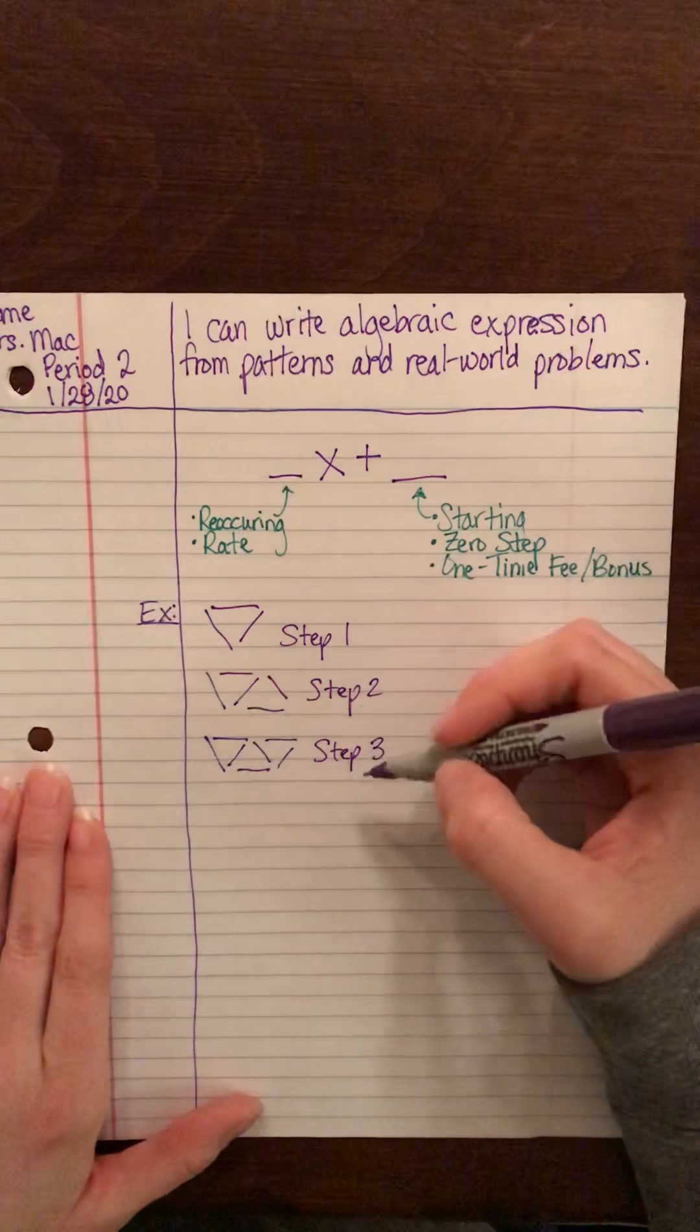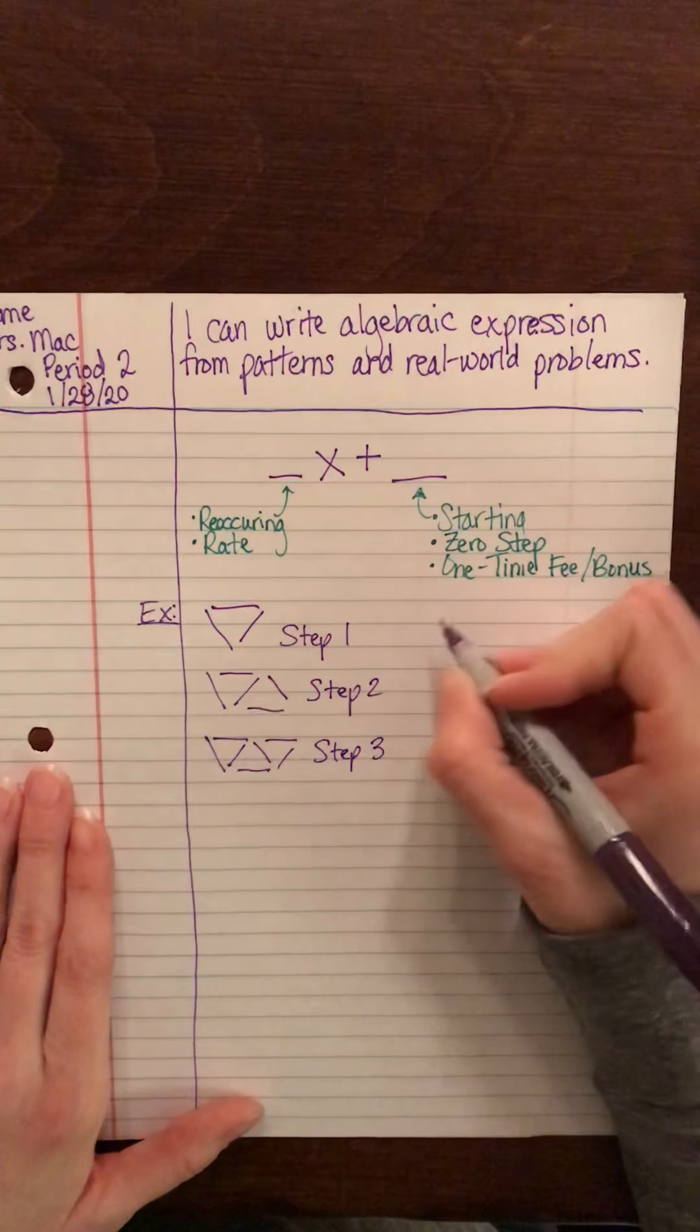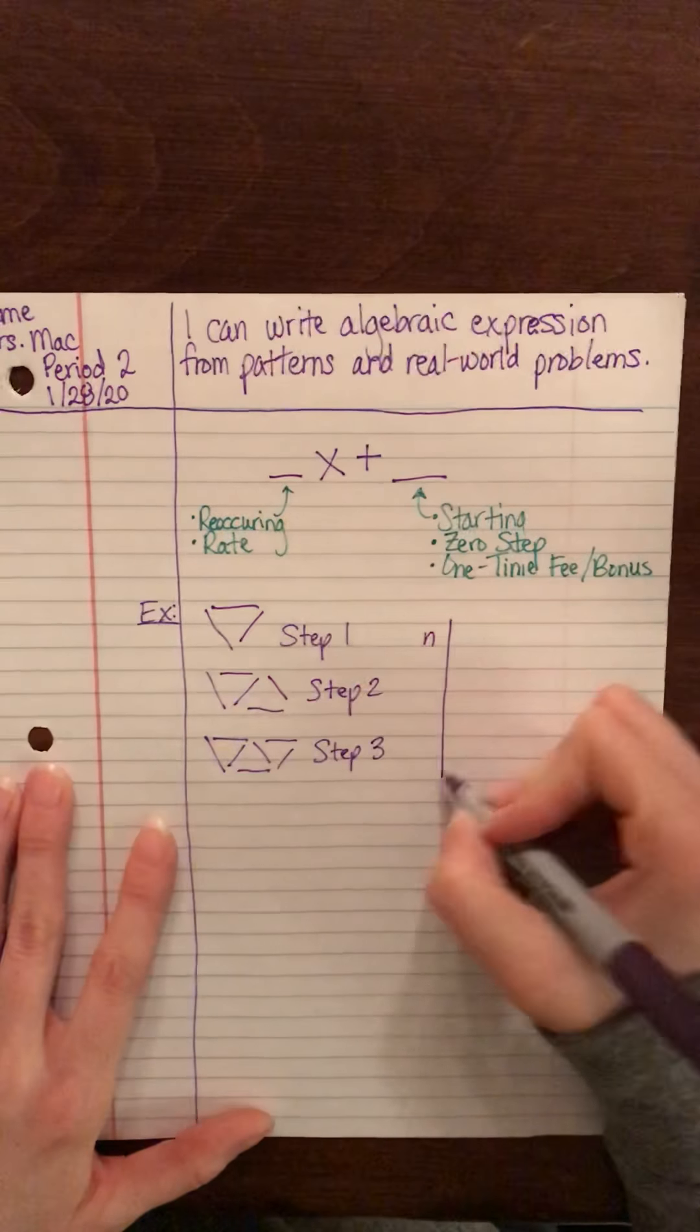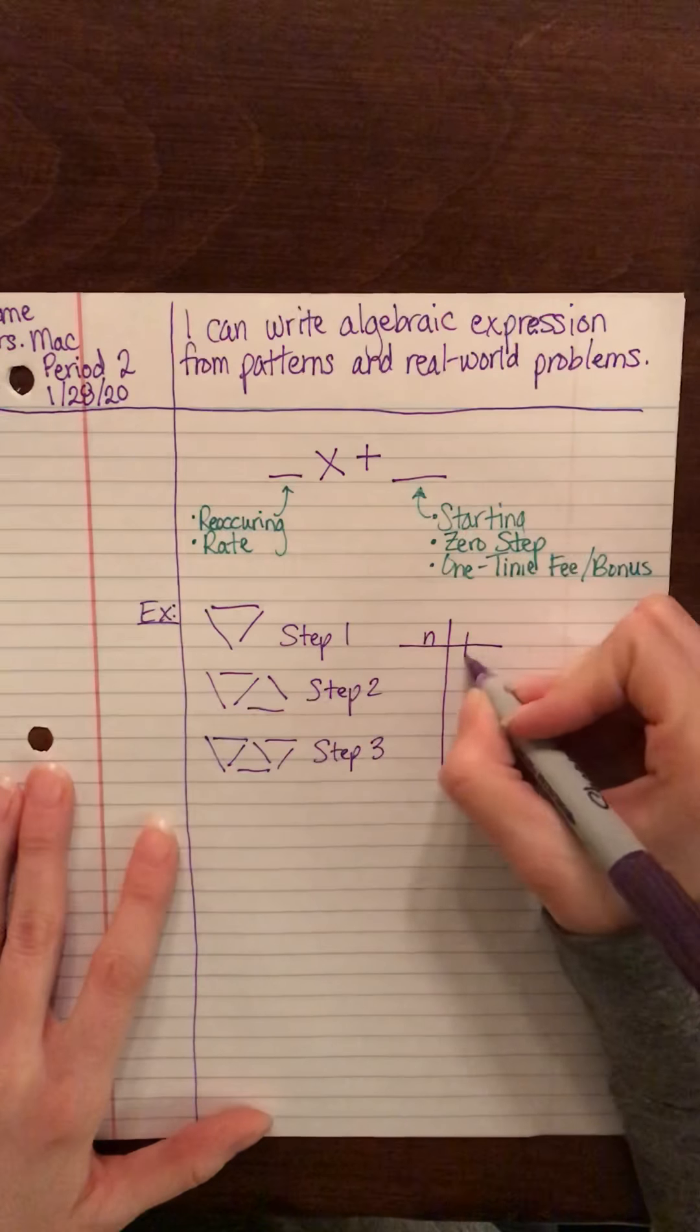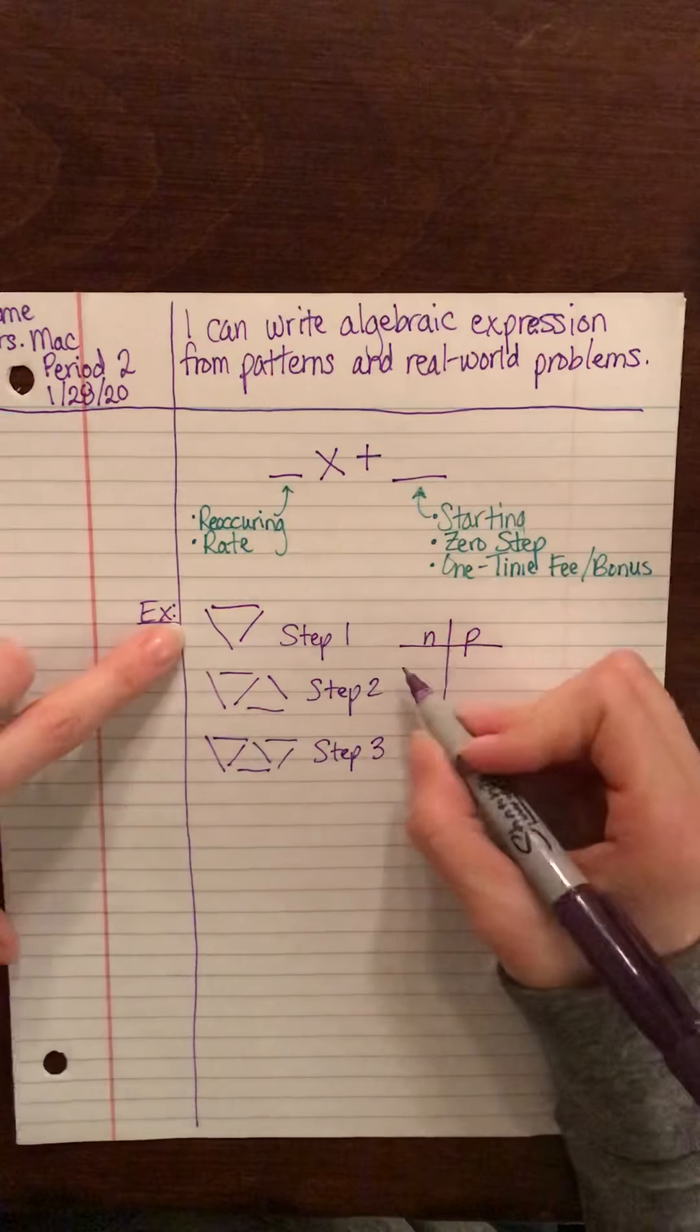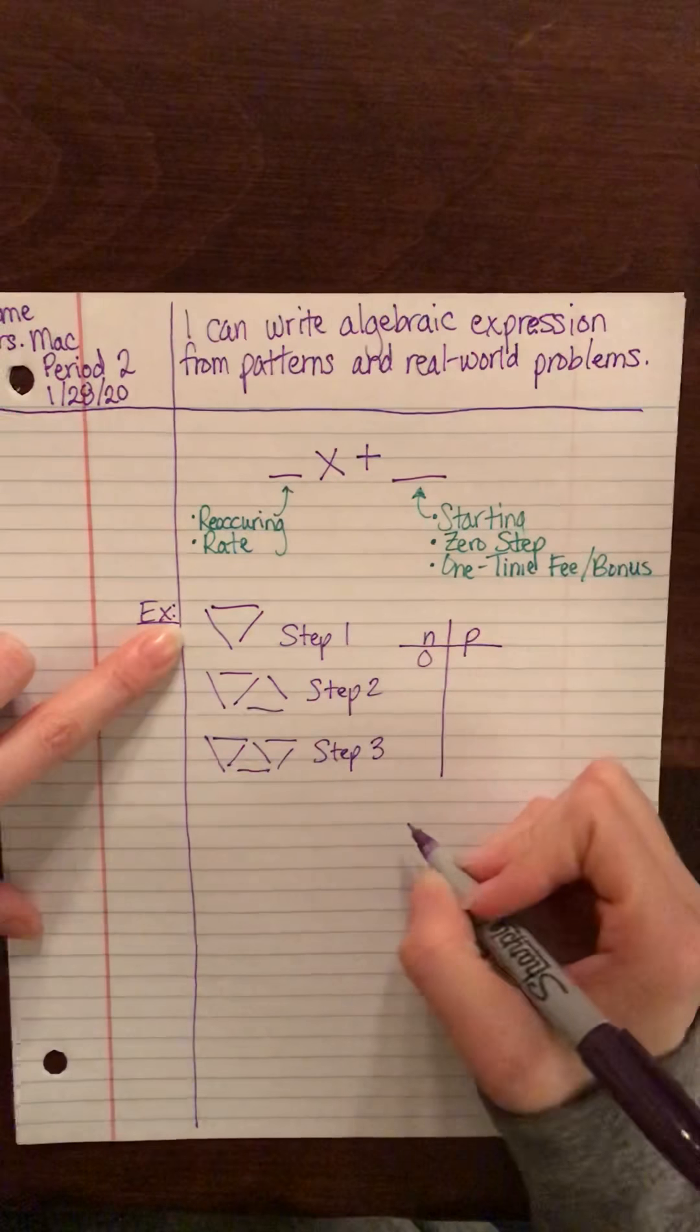The first thing that I want to do is create a table. So I'm going to have N stand for the step number and I'll make P stand for the toothpicks, the number of toothpicks. Okay, and I'm going to leave a space at the top there so that we can do the zero step, but we'll come back to that in just a second.